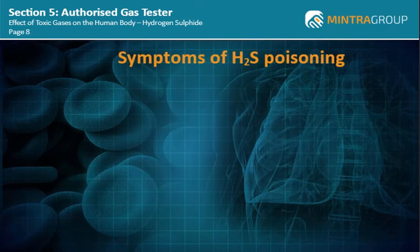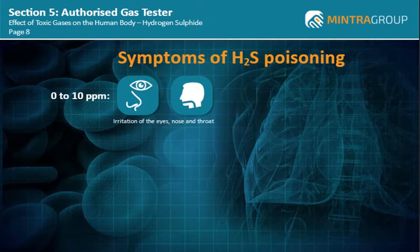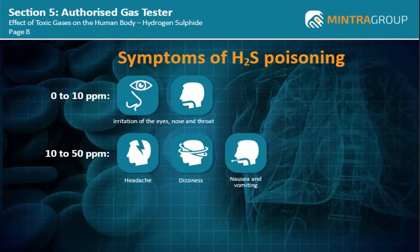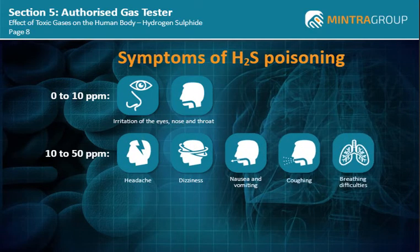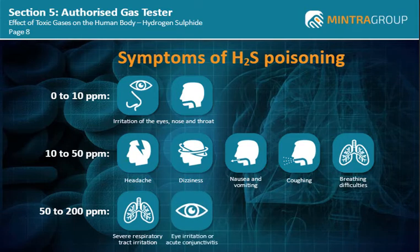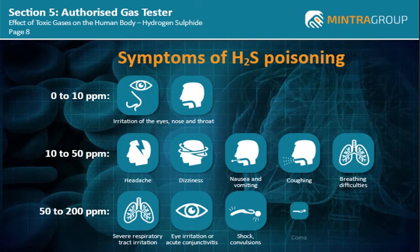Let's examine some of the symptoms of H2S poisoning. At 0-10 ppm: irritation of the eyes, nose and throat. At 10-50 ppm: headache, dizziness, nausea and vomiting, coughing and breathing difficulties. At 50-200 ppm: severe respiratory tract irritation, eye irritation or acute conjunctivitis, shock, convulsions, coma and possible death.